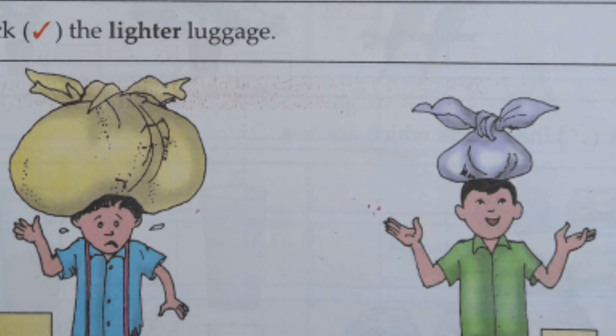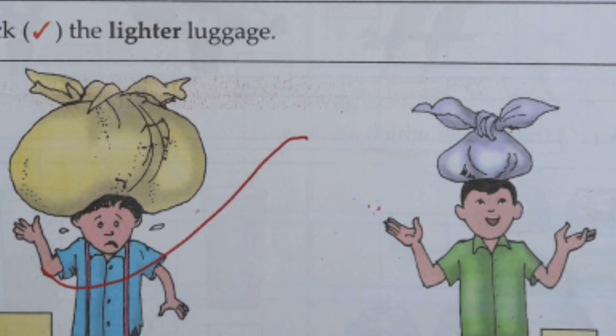You see the luggage on the head. There is a big bag and there is a small one. The big bag is the larger luggage, and the other is small. You have to put a tick mark near the larger luggage, which is on the left side.